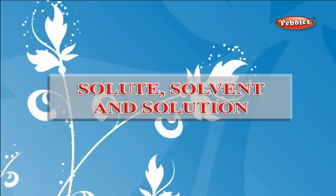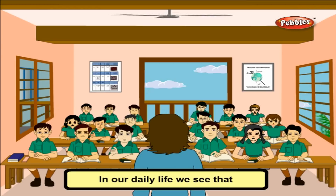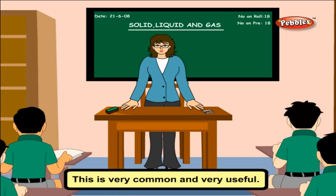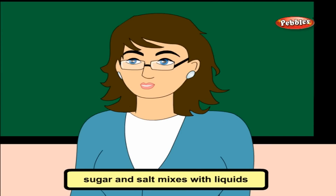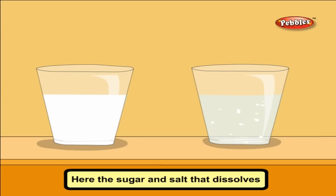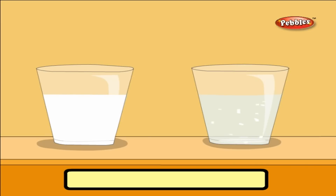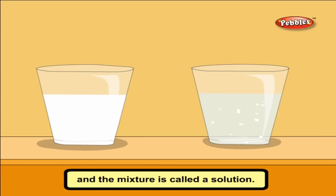Solute, solvent and solution. In our daily life, we see that some solids mix with liquids. This is very common and very useful. Can anyone tell any example of this? My mother adds sugar to milk for me to drink. Yes! Sugar and salt mix with liquids like milk and water. The sugar and salt that dissolve in water are called solute. The water and milk are the solvent, and the mixture is called a solution.